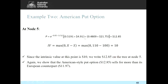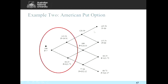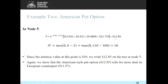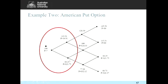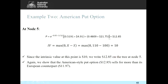Comparing the results: the European put sold for $11.97 and the American put for $12.85, confirming that American options sell for more than their European counterparts. It's not difficult — just very tedious and mechanical. After some practice it becomes quite straightforward.